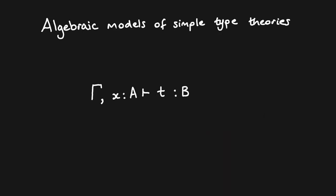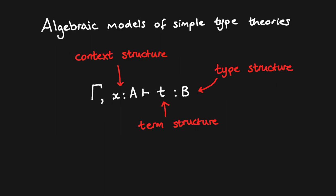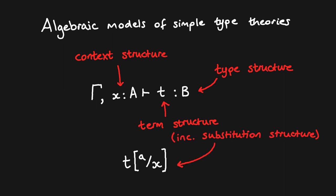Let's consider the structure that is involved in a simple type theory. Here we have the typical form of a term judgement. We can see that there are three aspects we shall need to consider: the structure of the variable contexts, the structure of the terms, and the structure of the types. These correspond roughly to the different kinds of judgement in a simple type theory. Note that when we describe the term structure, we also need to give an account of the substitution structure, as terms may contain variables that are bound by the context and which may be substituted by new terms.